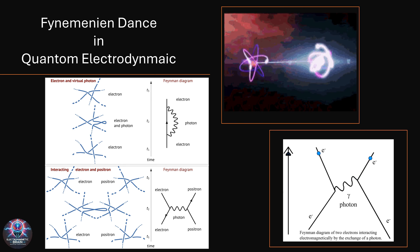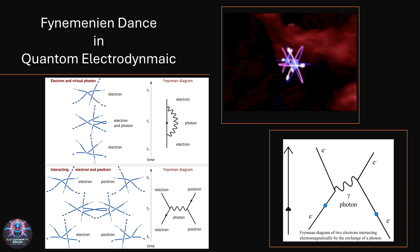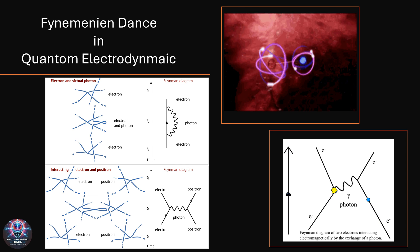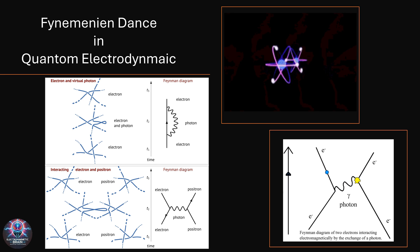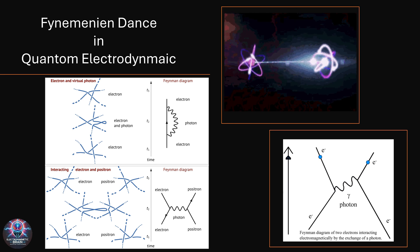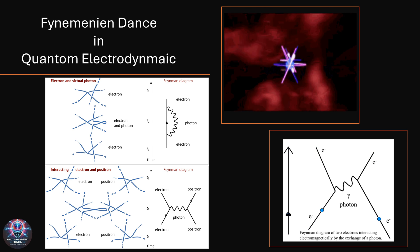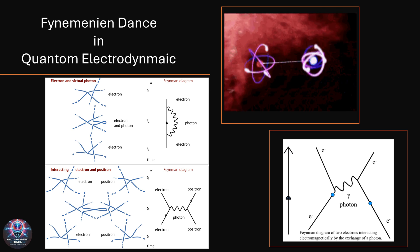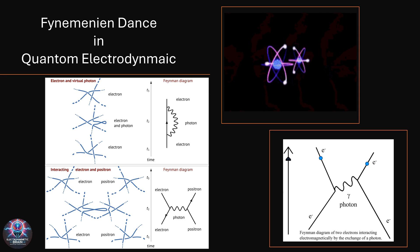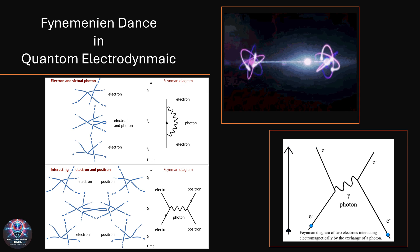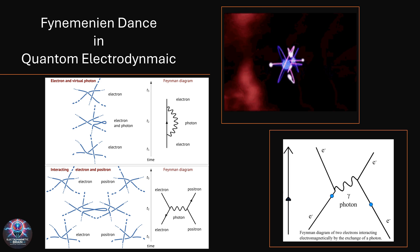Now, check out the bottom right diagram. This is another Feynman diagram, showing two electrons interacting by exchanging a photon. This is how electromagnetic forces work at the quantum level. Even though we don't see it with our eyes, this constant exchange of virtual photons is what makes everyday electricity, magnetism, and even light itself possible. And finally, in the top right, we have a striking visualization of two charged particles exchanging energy through photon interaction, an artistic way to show the invisible but powerful effects of quantum mechanics in action.